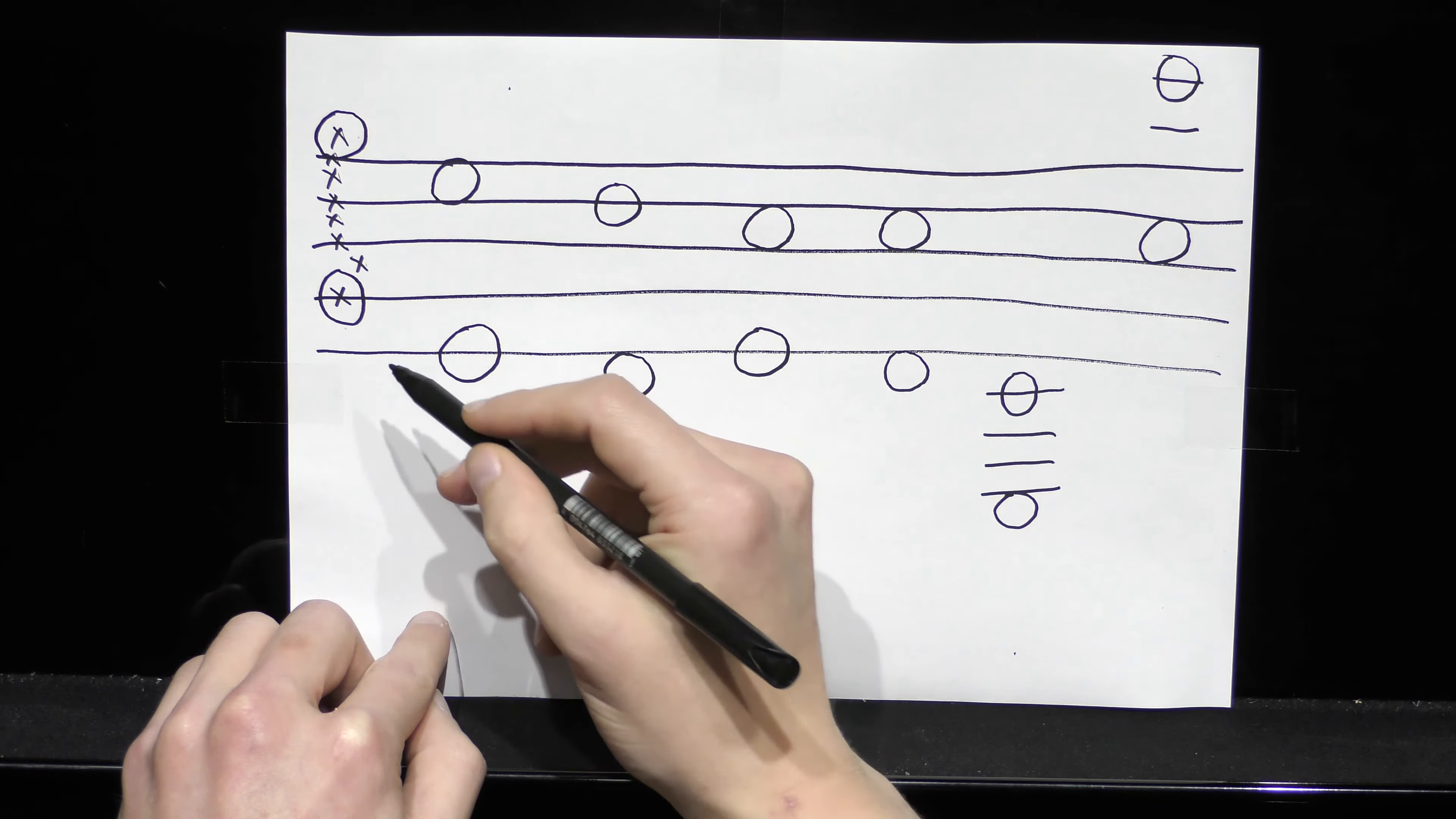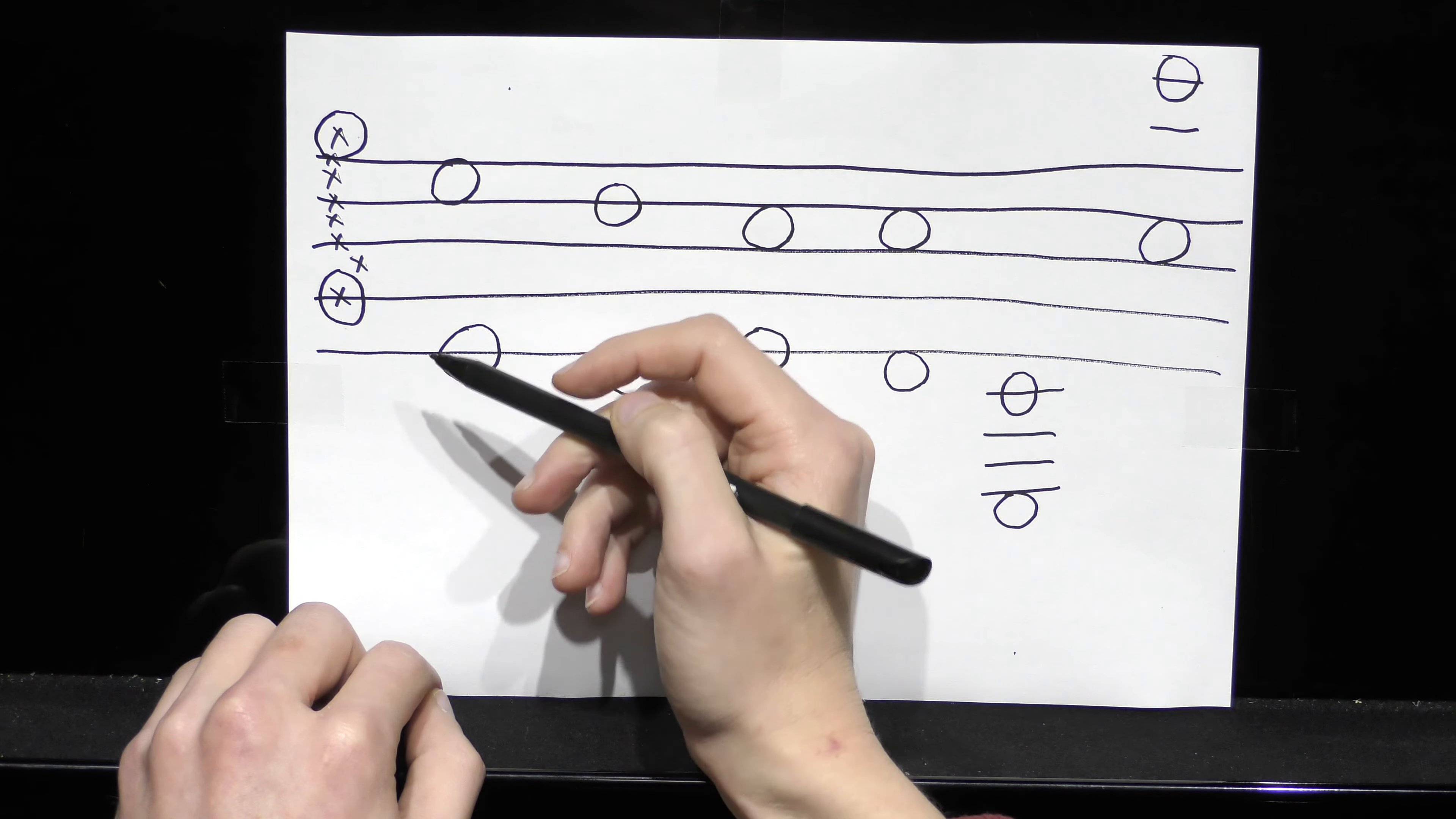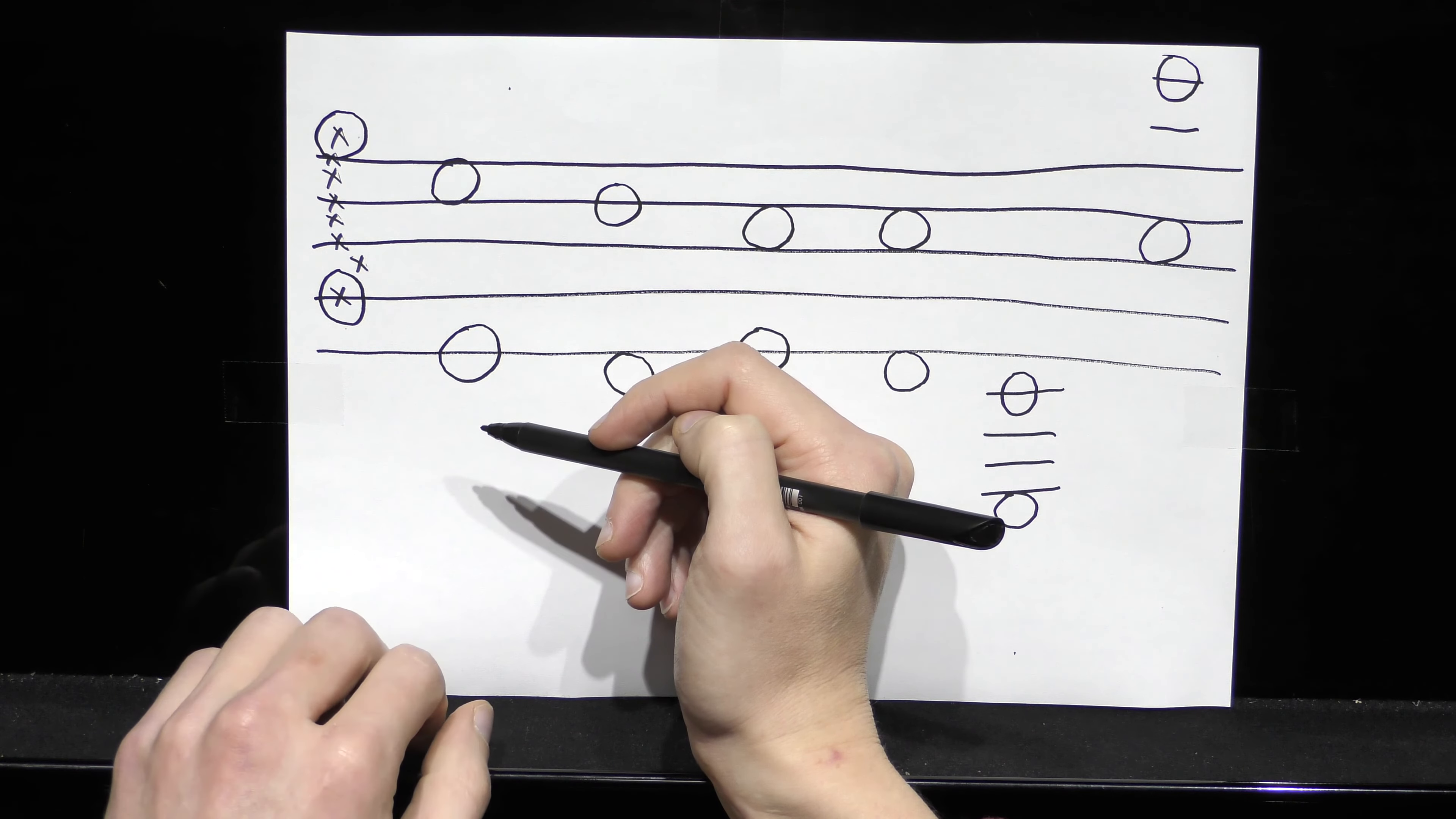Now counting in that way from one to eight, so eight being eighth like octave or octopus with eight legs, will always get you the right answer, but perhaps not as quickly as you might need when you're reading music. So we need a more visual method of recognizing whether something is an octave.